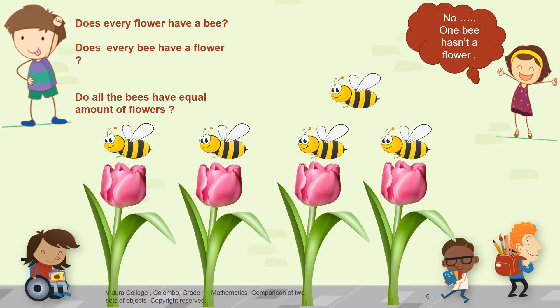So here we have some beautiful flowers. Look, who's on that? There are some bees as well. Now this little boy wants to know whether there are enough flowers for each bee. Does every flower have a bee? Does every bee have a flower? Do all the bees have equal amount of flowers?